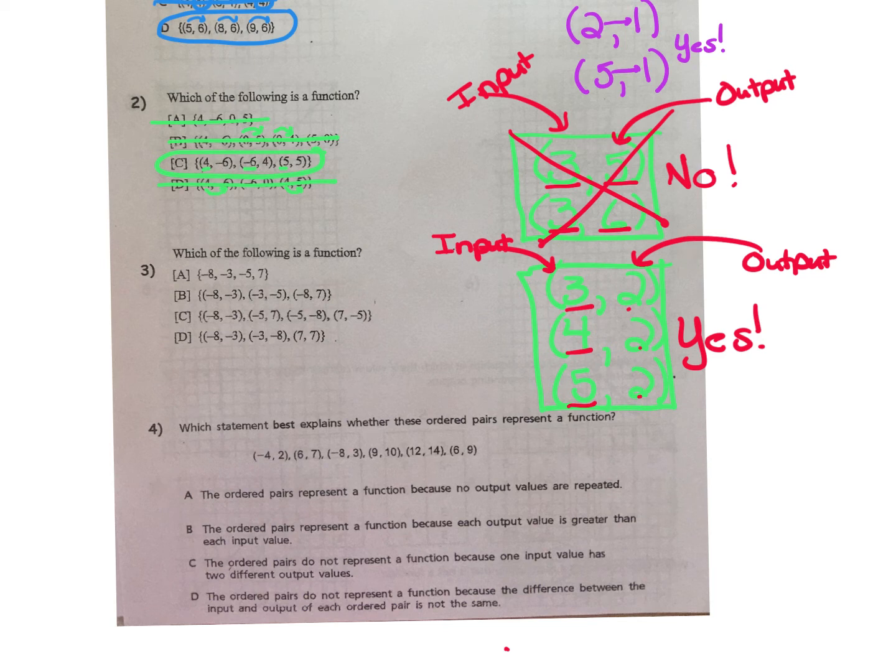In number 3, it asks, which of the following is a function? Well, certainly not A. It's just a list of values, a set of values. But let's check each of the remaining possibilities, B, C, and D. In letter B, we see that negative 8 cannot have two different output values, so cross that off. And in letter C, negative 5 cannot have two different output values. Cross that off. Check over letter D, and yes, indeed, this is a function.